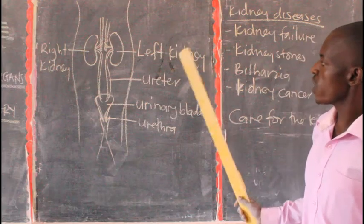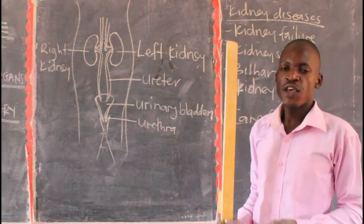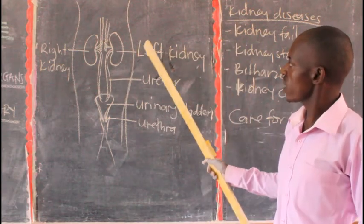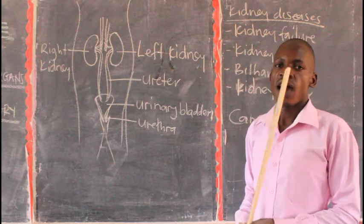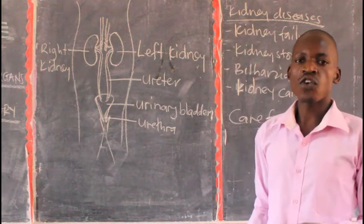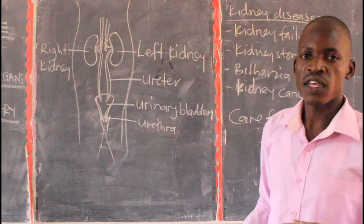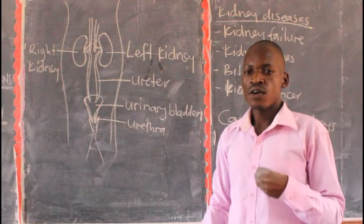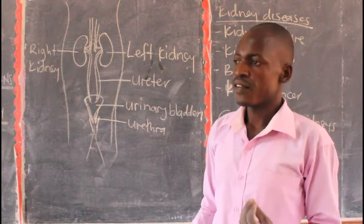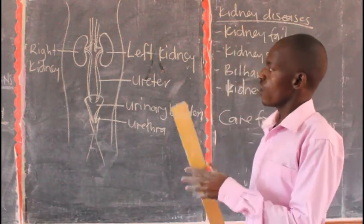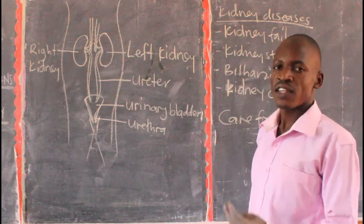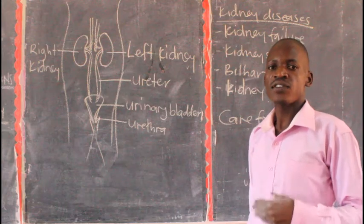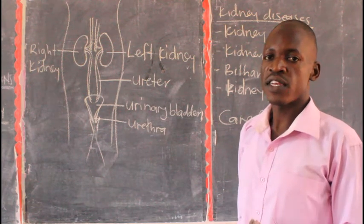What is the major function of the kidney? The major function of the kidney is to filter blood. The kidney filters blood. Two, the kidney also balances the amount of water and mineral salts in the body and in the blood. So the kidney has two functions: one, to filter blood; two, to balance the amount of water and salt in the body.